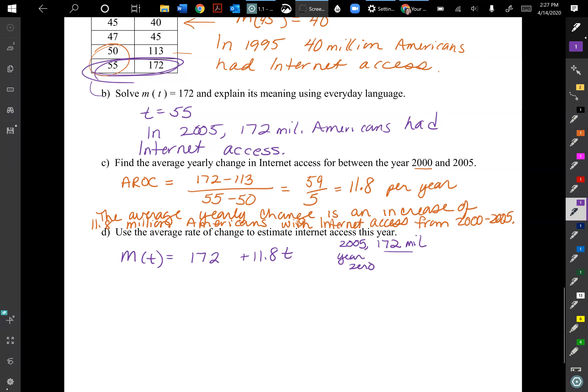For part d, we're going to use the average rate of change to estimate the internet access this year. This is where we're going to extrapolate off a bit, so we want to use the most recent piece of data, which would be the last line of our table up here. So we have in 2005, that'll be our year zero, there were 172 million people with internet access, well Americans.